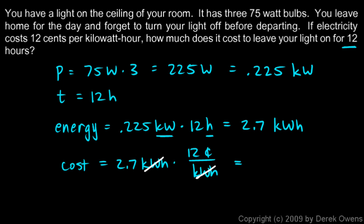And it just leaves us with 2.7 times 12. That comes out to 32.4 cents, and you could write it as 32.4 cents like that, or you could write it as .324 dollars. Either way would be okay.